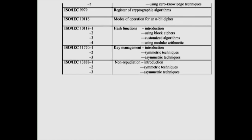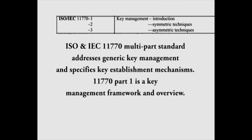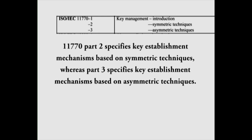ISO and IEC 11770 is a multi-part standard that addresses generic key management and specifies key establishment mechanisms. Part 1 is a key management framework and overview. Part 2 specifies key establishment mechanisms based on symmetric techniques, whereas part 3 specifies key establishment mechanisms based on asymmetric techniques.